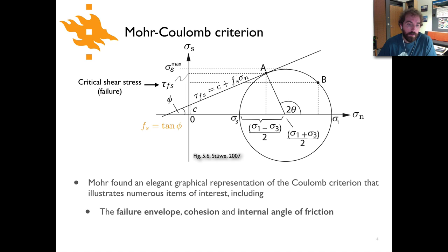This relationship that is basically straight from the Coulomb criterion can be plotted in a rather elegant way as a Mohr circle. So what we'll do now is step through the things that are shown on this plot including the failure envelope, cohesion, and internal angle of friction. All of these different parameters are graphically illustrated here in this Mohr circle diagram.